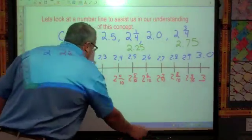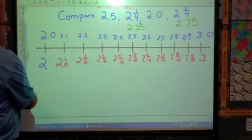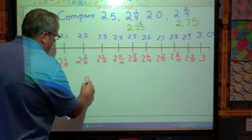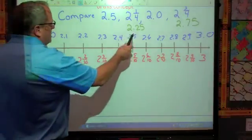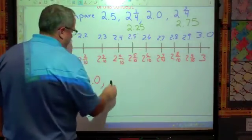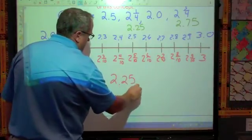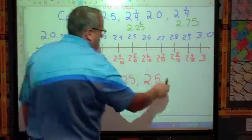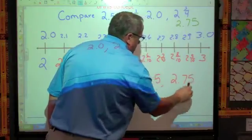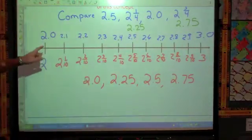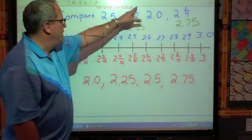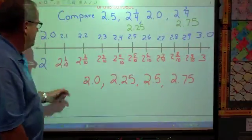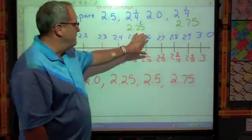And now I could order that, I could put those numbers in order based on what I now know. So obviously, the smallest number would be 2.0. The next smallest number would be 2.25. The next smallest number would be 2.5. And the next smallest number would be 2.75. So there you have what we've done. We've looked at comparing those numbers. We converted the fractions to decimals to make it much easier for us. And then we did a number line just to give us a better idea of where they fit.